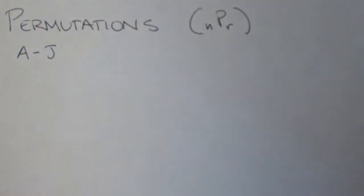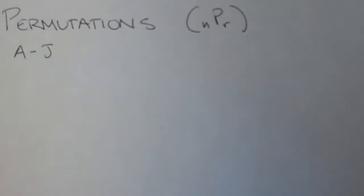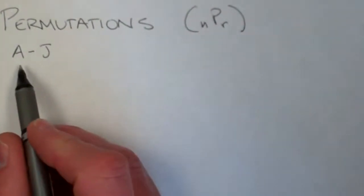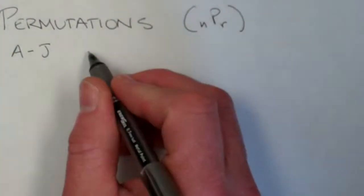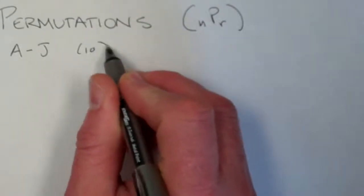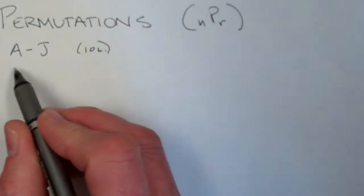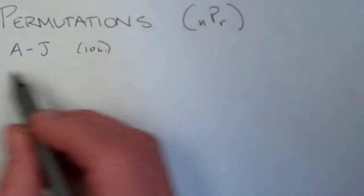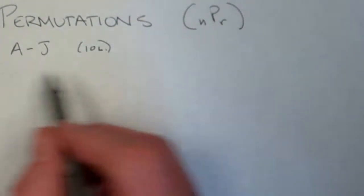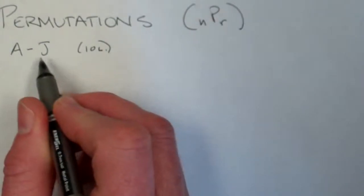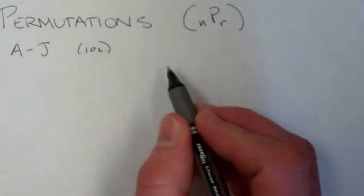All right, we are making a little video here on permutations. Suppose we have the letters A through J, that's ten letters. And we're going to make a computer password using every single one of those letters. It's only uppercase or only lowercase. So we have ten letters, we can only use them once, and we're going to make a password.